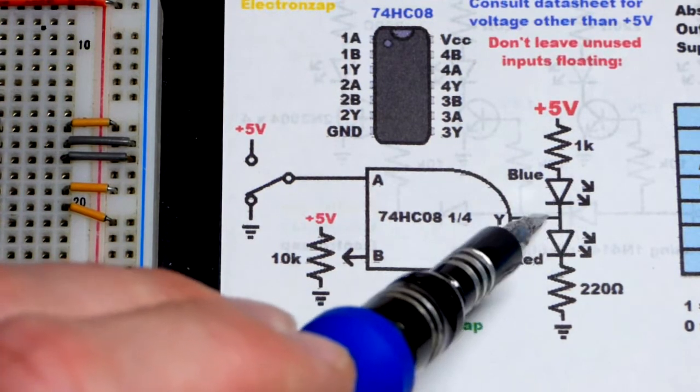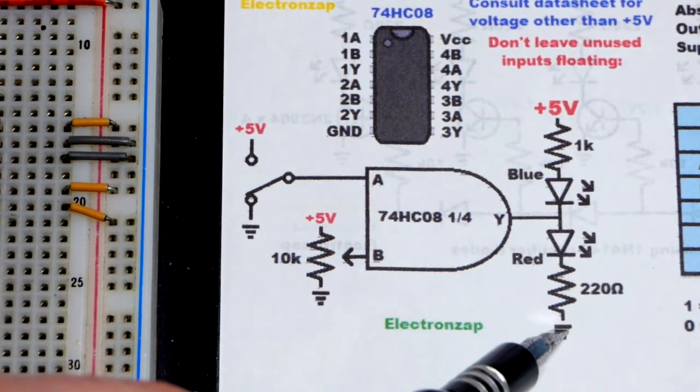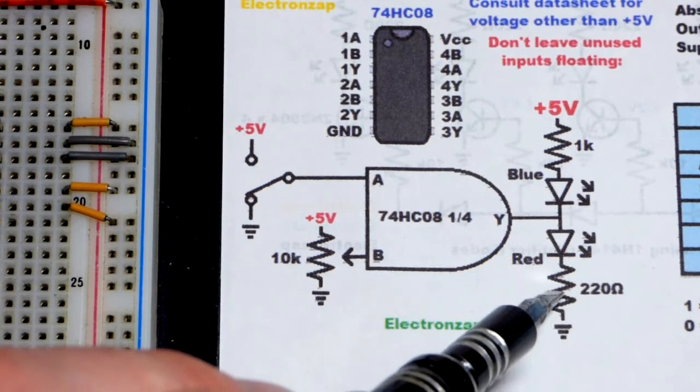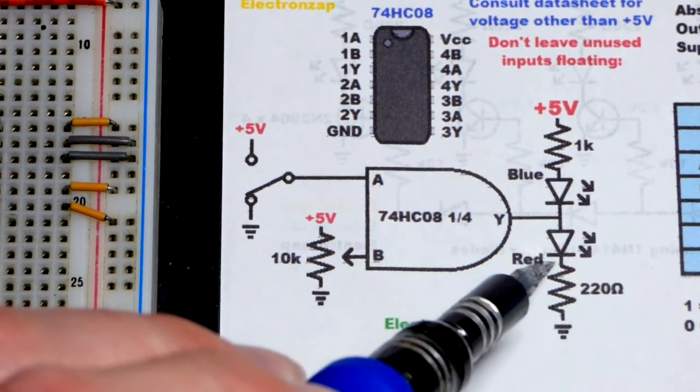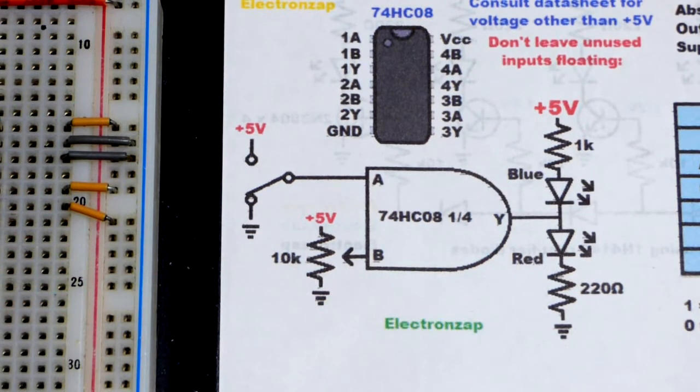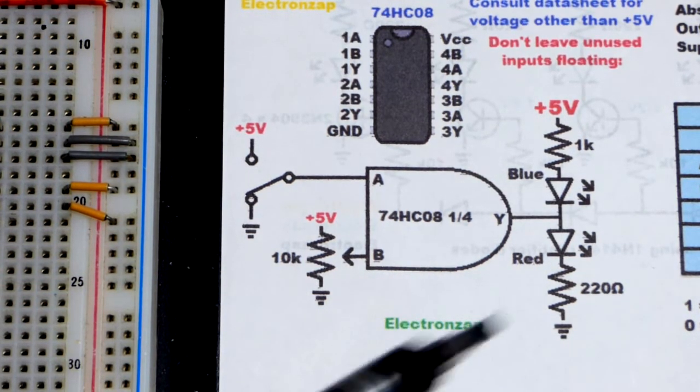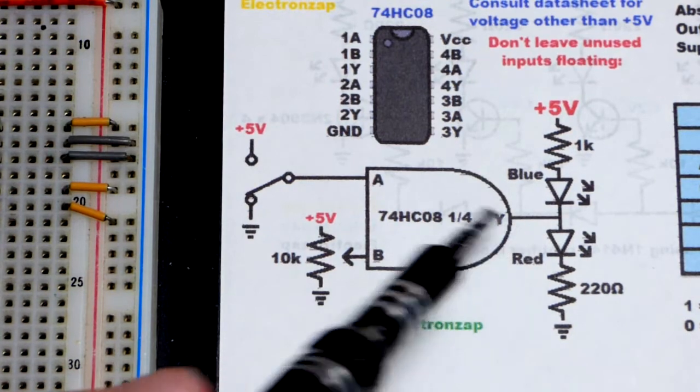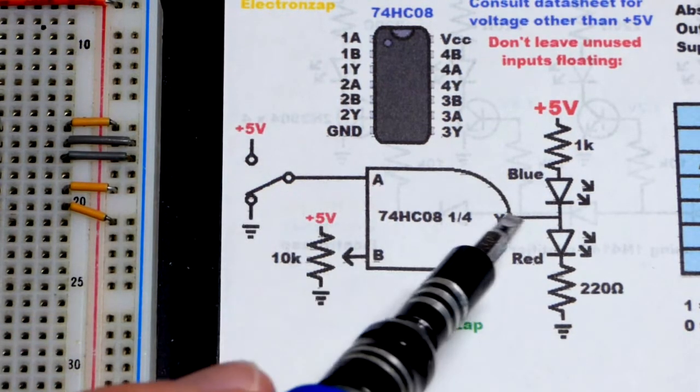Then the red LED, we got the long lead, the anode, to the output. Short lead, the cathode, to the negative supply ground in this case. Again a lower value resistor, 220 ohm, because it needs more current to get about as bright as the blue LED right there.